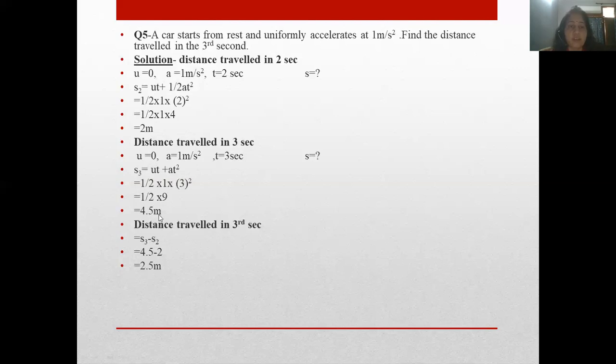So distance traveled in third second means only one second - the last one second that it needs, that one second how much it traveled. That is: subtract S₂ from S₃. Total found for three seconds, subtract the first two seconds, that is 2.5 meters. So in the third second, meaning the last one second, how much it traveled: 2.5 meters.